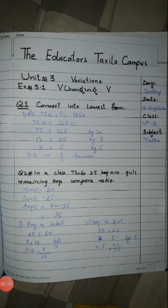Question number 1: convert into lowest form. Part one — 750 rupees and 1250 rupees. Find the ratio in lowest form. We have to divide both by the same multiple. For example, 750 ratio 1250 — first divide by 10, giving 75 and 125, then divide by 5 giving 15 and 25.